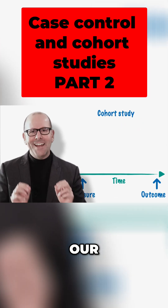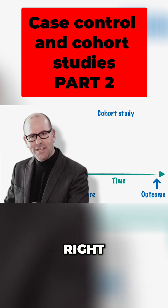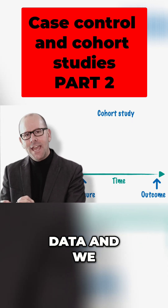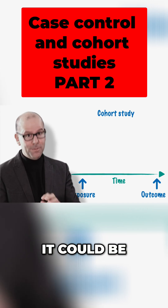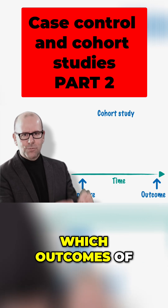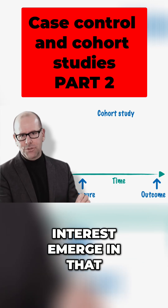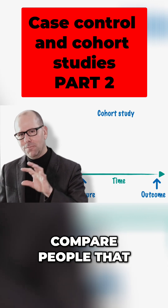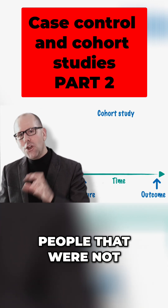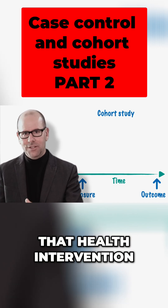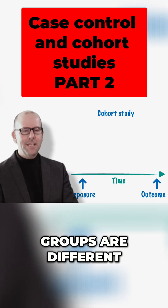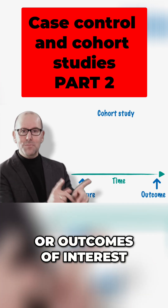When we do a cohort study, our starting point is the exposure of interest. We've got a cohort of people who've been exposed to something of interest, we've collected that data, and we follow them over time — and it could be a long time. We follow them over time and collect data about the extent to which outcomes of interest emerge in that group. Then in the analysis, we compare people that were exposed to the exposure of interest to people that were not exposed to that hazard or health intervention, and we see the extent to which the two groups are different in terms of the outcome of interest.